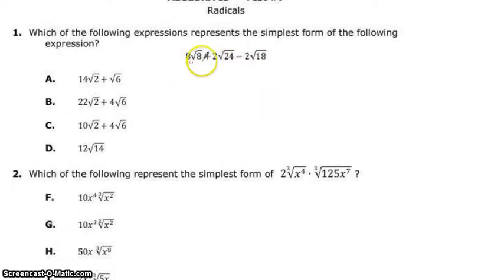So number one, we want to add all these together. First we need to simplify them. So I'm going to break down each one of these. That's four times two, two times two, that's a pair. It's going to come outside and multiply by the eight, so that's sixteen. And then we have a leftover square root of two. The twenty-four, that's six times four, three times two, and two times two. So I get a pair of twos, going to come outside, multiply by that two, so that's four. And then we have a leftover three and two, so those multiply square root of six.